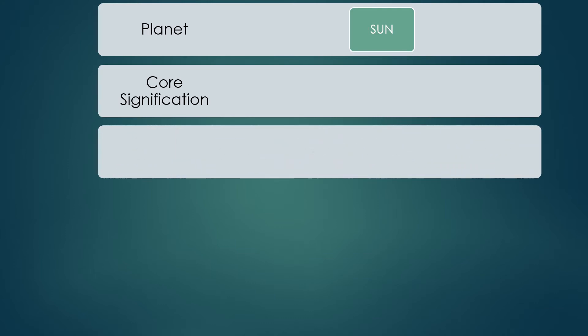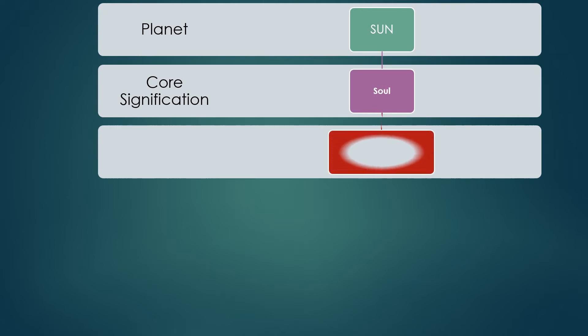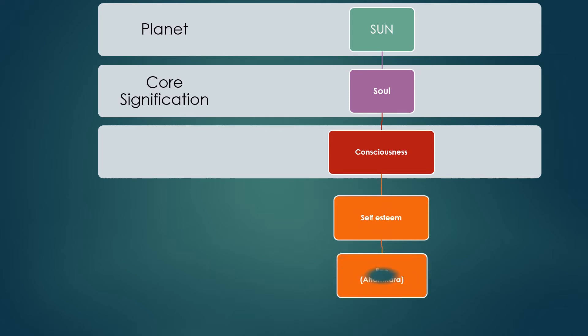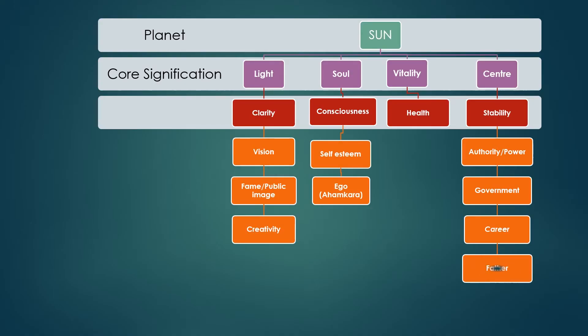Sun is the Jiva, the soul. The seed of our consciousness is Sun. The soul constitutes our consciousness and helps us understand who we are — 'I am a president,' 'I am a CEO,' 'I am a minister.' This consciousness about yourself is given by the Sun, so self-esteem as well as the ego come under Sun.